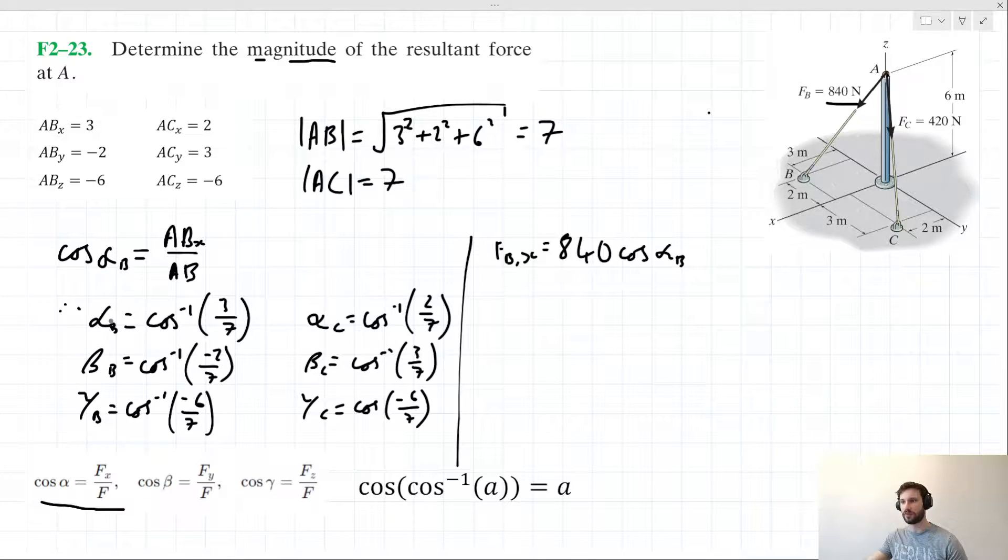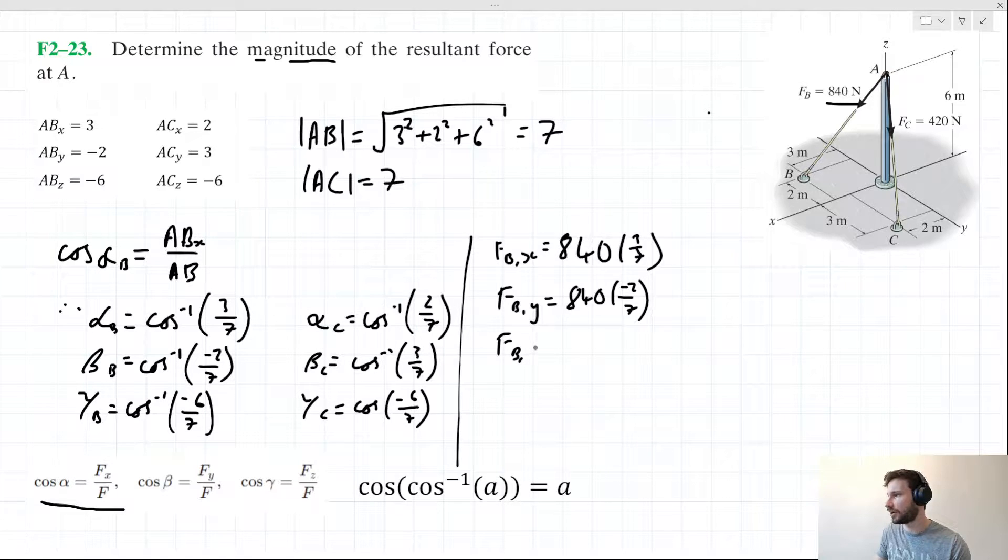Note that alpha B takes the value of inverse cosine of 3 over 7. The cosine functions cancel, as we've encountered before, so I can rewrite cosine of alpha B as 3/7. For the Y component, FB_Y equals 840 times -2/7. And FB_Z equals 840 times -6/7.